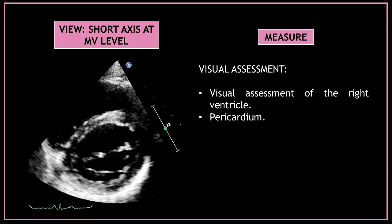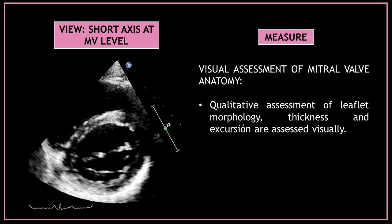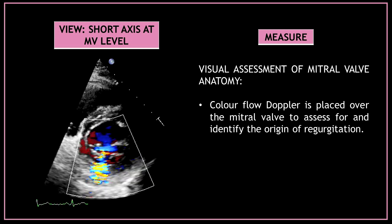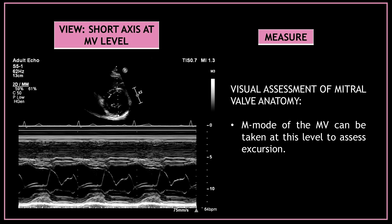Now perform a visual assessment of the right ventricle and the pericardium. This is a very good view to do a visual assessment of the mitral valve anatomy — analyze the leaflet morphology, thickness, and excursion. Place color flow Doppler over the mitral valve to assess for and identify the origin of regurgitation. You can also use M-mode at this level to assess the mitral valve leaflet excursion.